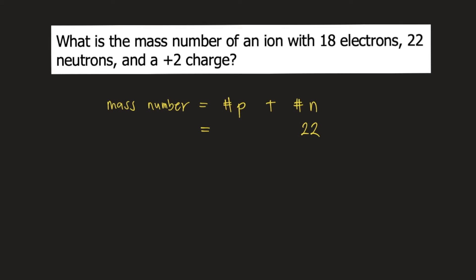It says it has 18 electrons and a charge of positive 2. We know that the charge of an ion is equal to the number of protons minus the number of electrons.